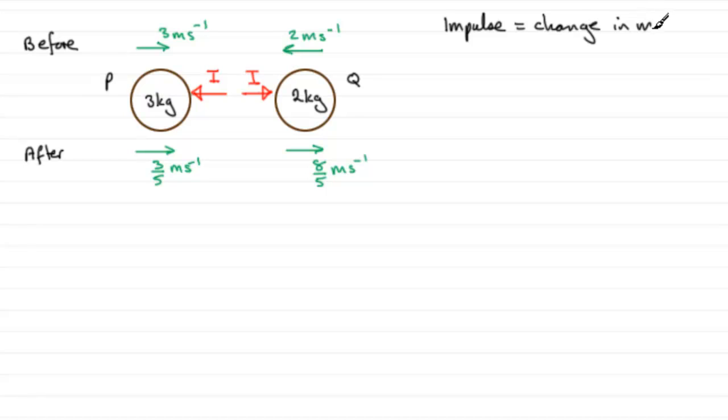And that would mean that that impulse I is equal to MV, the final momentum, minus MU, the initial momentum. Now impulse is a vector quantity. Direction matters. So when you're doing questions like this, whatever particle you're working on, just say to the reader what you're doing.